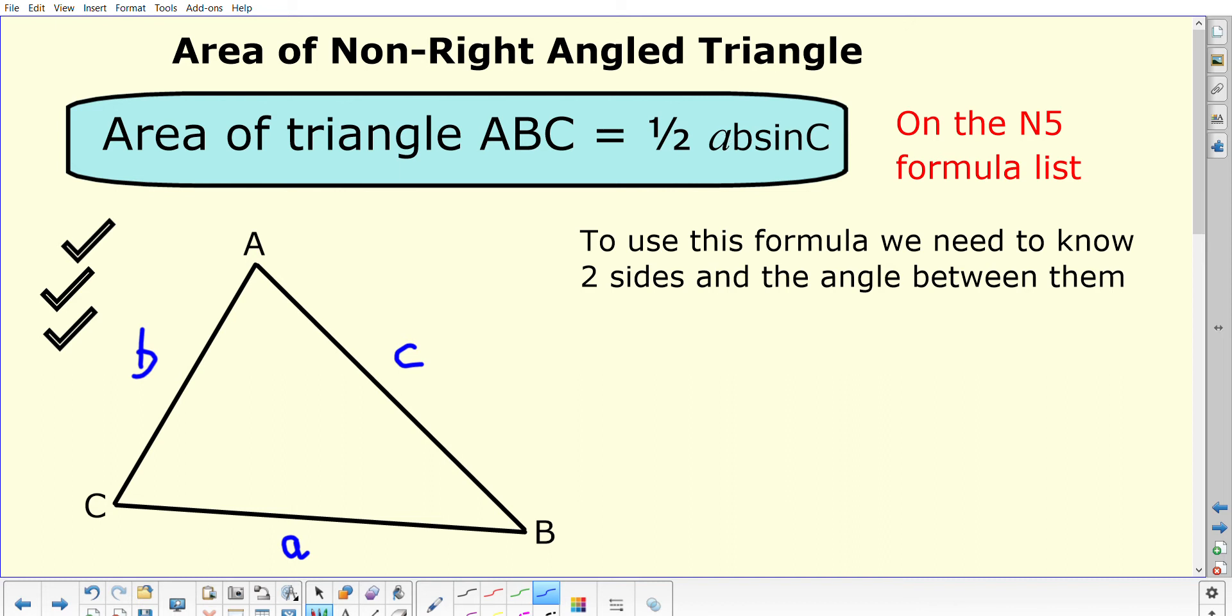In order to use this formula, we need to know side lowercase letter a, lowercase letter b, and we also need to be able to work out the sine of capital C—that means the angle C, which means we would need to know this angle in here. To use this formula, we need to know two sides that are joined together and the angle in between them. I would need to have values for these two sides and for this angle here.